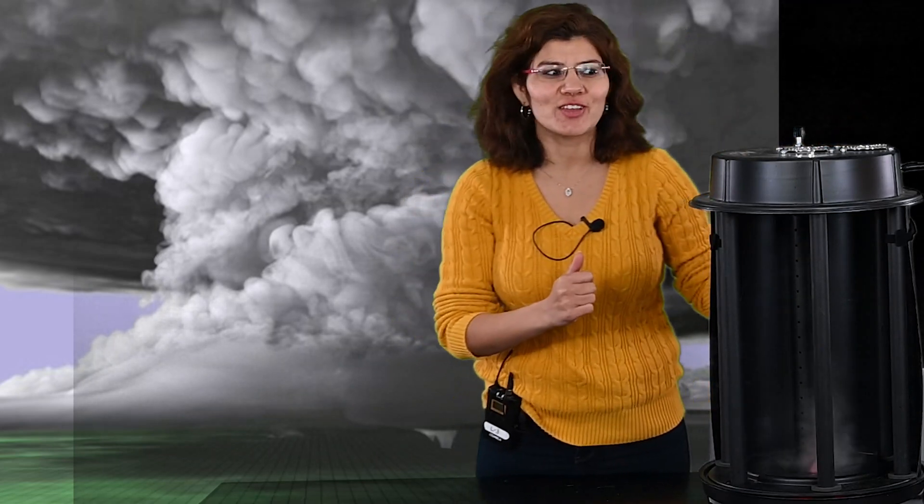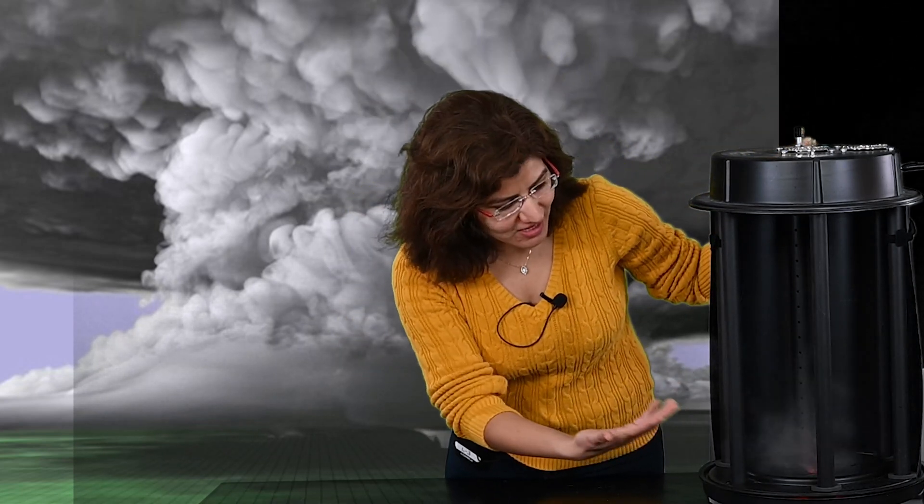You see here a tornado machine. We have two fans in here, which I think you cannot see, but there are two fans in here. The center fan is giving the lift and the side fan is giving the rotation. And because of this, you see a very nice twister in here. So now you see the tornado formed in the tornado machine.